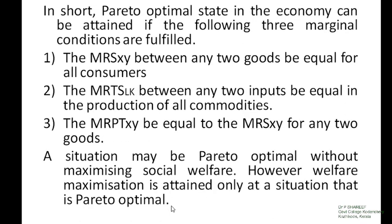The third condition for a Pareto-optimal or efficient composition of output requires that the marginal rate of product transformation between any two commodities must be equal to the marginal rate of substitution between the same two goods. That is, the marginal rate of product transformation between commodities X and Y will be equal to the marginal rate of substitution between X and Y for consumer A, which will be equal to the marginal rate of substitution between X and Y for consumer B. This marginal condition is related to the technical conditions of production and the state of consumer preferences, where efficiency in production as well as efficiency in exchange are both coincided, which is the overall condition of Pareto optimality.